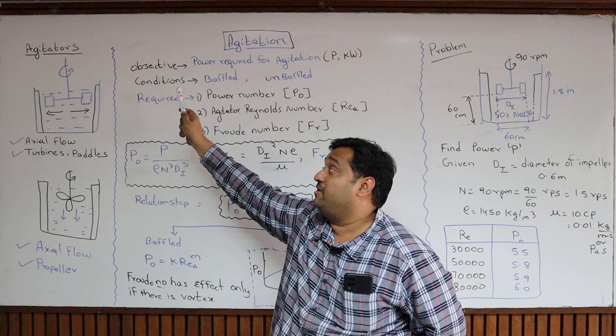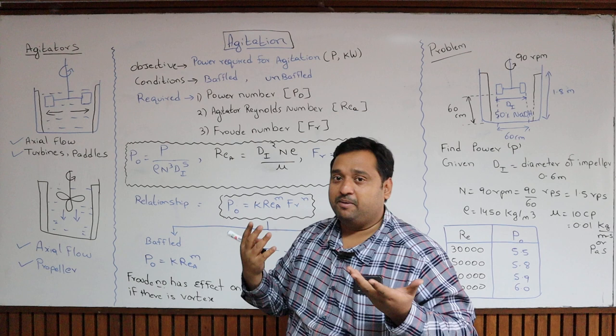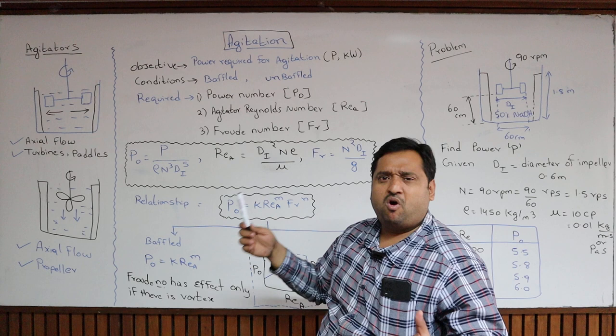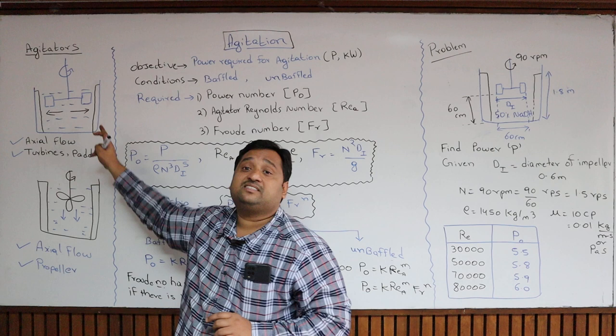Today's objective is to find the power required to rotate an impeller. How much power do I have to put into the impeller so that it can rotate at a certain RPM — say 60 or 70 rotations per minute — depending upon the requirement? We need to find the power required for agitation in terms of kilowatts, watts, or horsepower.